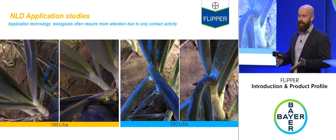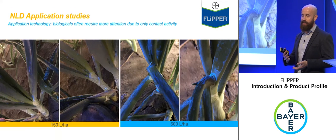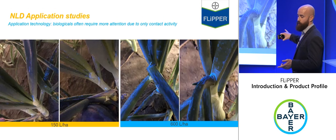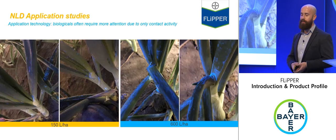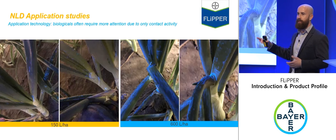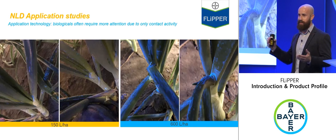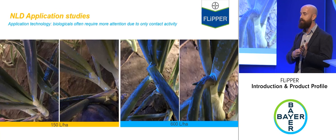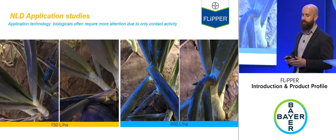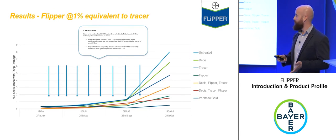The same trial also highlighted the water volume issue. At 150 litres per hectare, product coverage of the crop was clearly insufficient to reach the pest, whereas at 600 litres per hectare coverage was adequate. Fluorescent dye work from the Netherlands really illustrated this point visually.